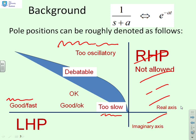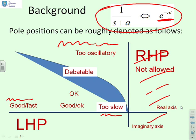There are areas in the middle where the message is more mixed. We're essentially using the inference that if you have a 1 over s plus a, with a pole at minus a, you're expecting a component e to the minus at in the response.